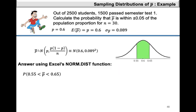Using Excel's NORM.DIST function, we can find the probability that P-bar is between 0.55 and 0.65, keeping in mind that P-bar is approximately normally distributed with a mean of 0.6, which equals the population proportion, and a variance of 0.089 squared. We rewrite this as the probability of P-bar less than 0.65 minus the probability of P-bar less than 0.55. Using the NORM.DIST function, this equals NORM.DIST(0.65, 0.6, 0.089, TRUE), since we want the area to the left of 0.65.